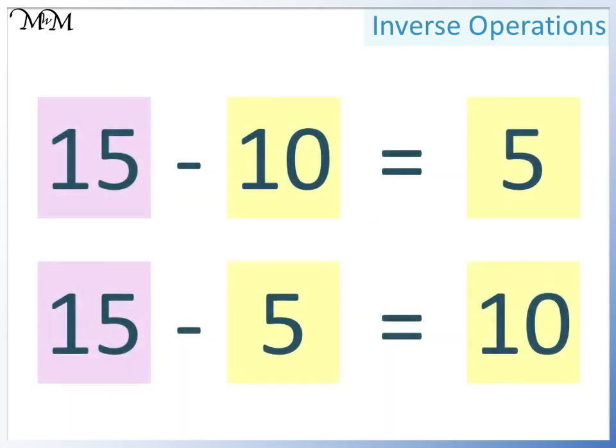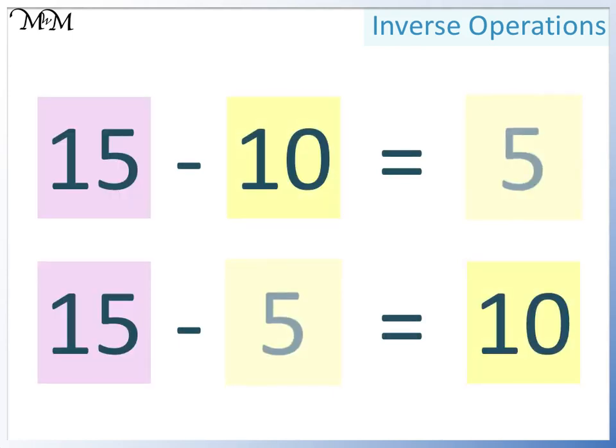So we have 15 take away 10 equals 5, and 15 take away 5 equals 10. We have the largest number at the start, and the order of the two smaller numbers can be swapped.